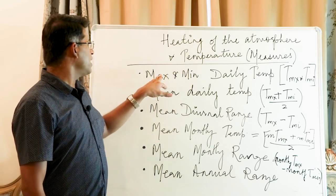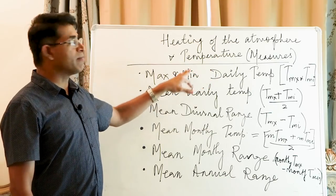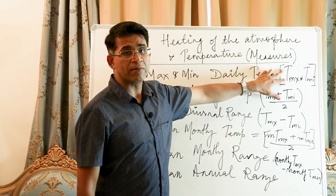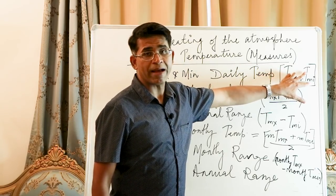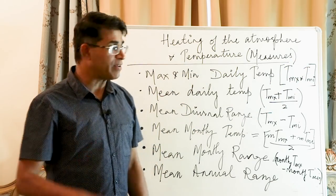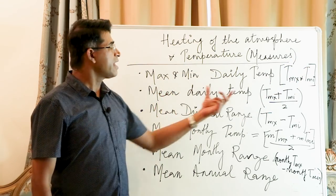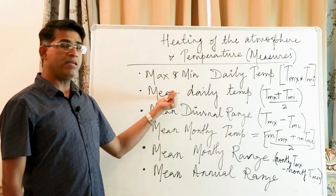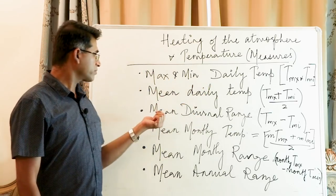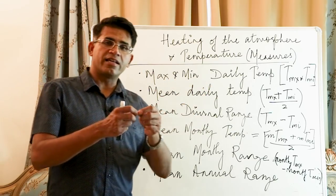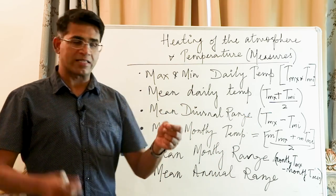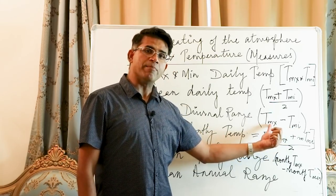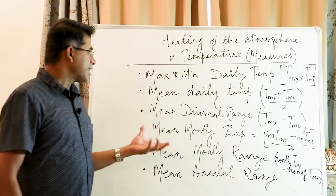That's what is meant by maximum daily temperature and minimum daily temperature, represented as T-max and T-min. If I take a mean of the maximum and minimum temperature, I get the mean daily temperature. The diurnal range is the range within which temperature fluctuates — the difference between maximum and minimum daily temperature.